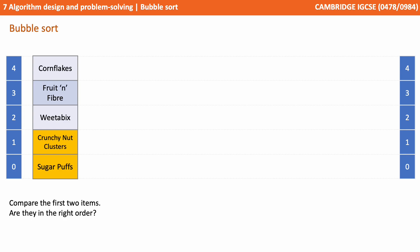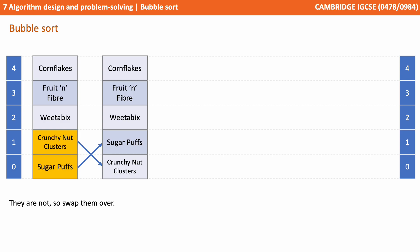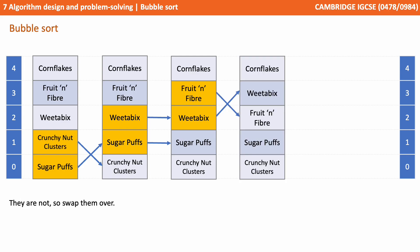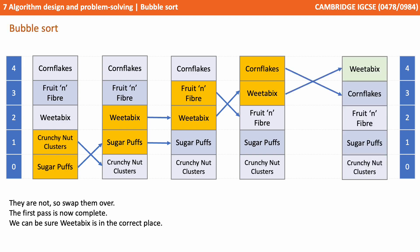We start by comparing the first two items. They're not in the right order, so we swap them over. We then compare the next two items — they are in the right order, so we leave them where they are. We compare the next two items — they're not in the right order, so we swap them over. We compare the next two items — they're not in the right order, so we swap them over. The first pass through our data set is now complete. We can be sure that Weetabix is in the correct place, and you can see why we call this a bubble sort, as Weetabix is effectively bubbled up to the top of the array in its correct position.